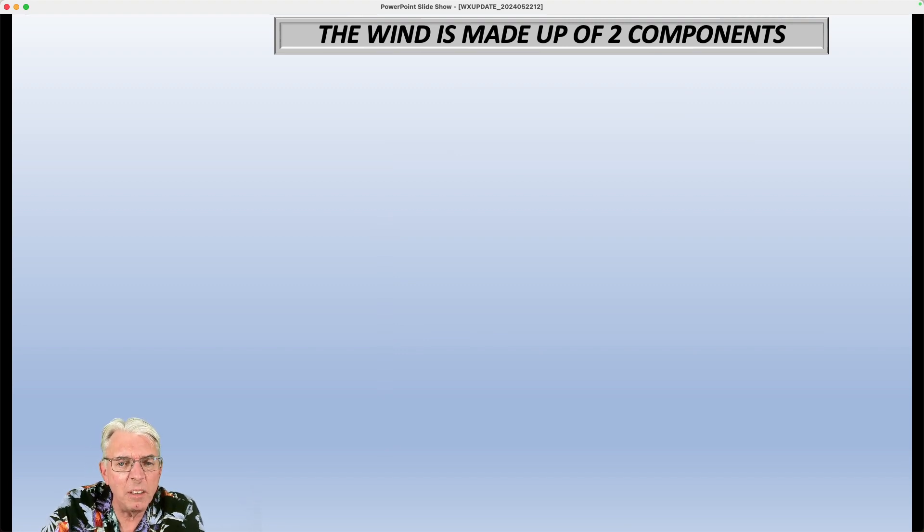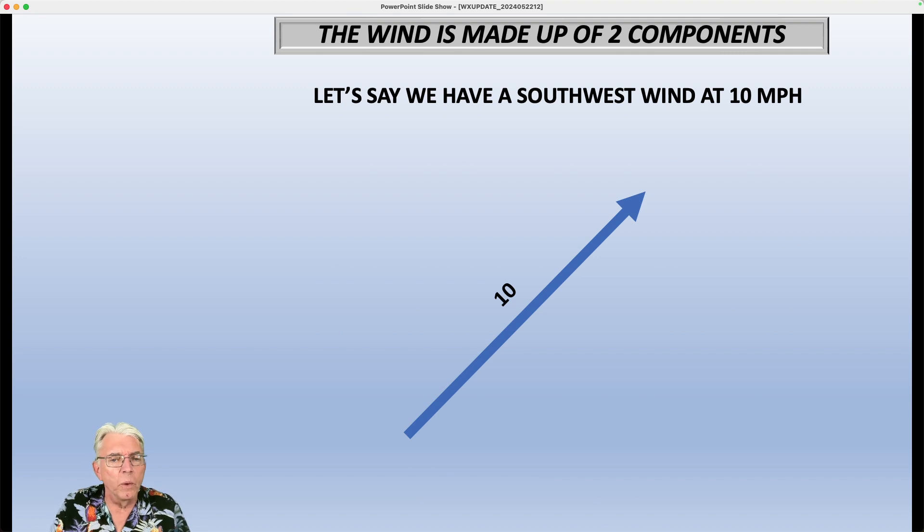So with all that in mind, let's say we have a southwest wind that's blowing at 10 miles per hour. Well, we're going to split that up into a U component and a V component. Now, how do we find out what U and V actually are? Well, we obviously have a right triangle down there, a 90 degree angle. Well, if you have a 90 degree angle there, then the other two angles are going to be 45 degrees. So let's put that in there.